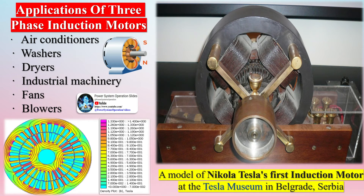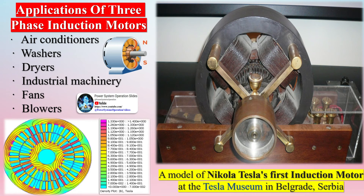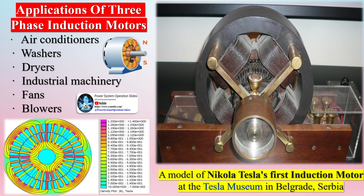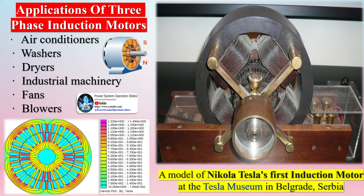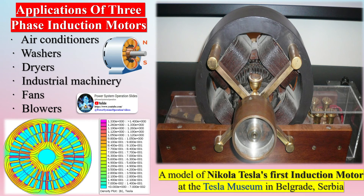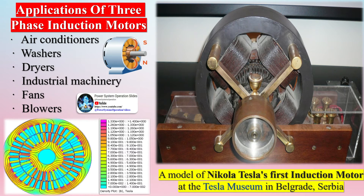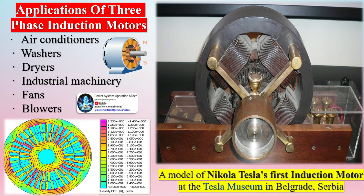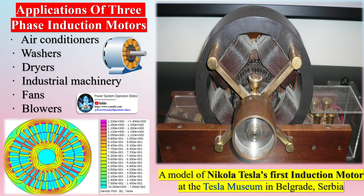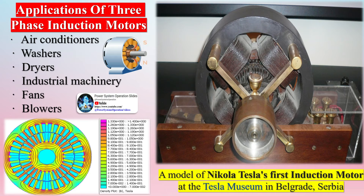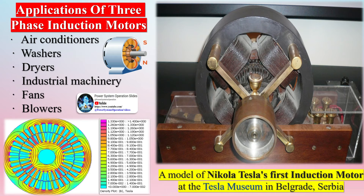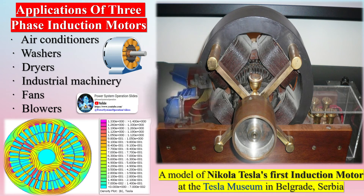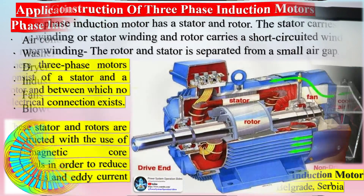A three-phase induction motor has a stator and a rotor. The stator carries a three-phase winding, and the rotor carries a short-circuited winding. The rotor and stator are separated by a small air gap, with no electrical connection existing between them. These stator and rotors are constructed with high magnetic core materials to reduce hysteresis and eddy current losses.